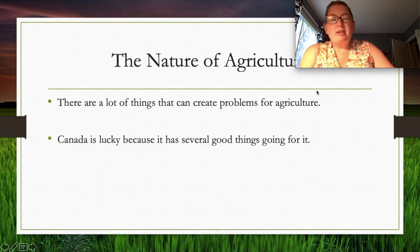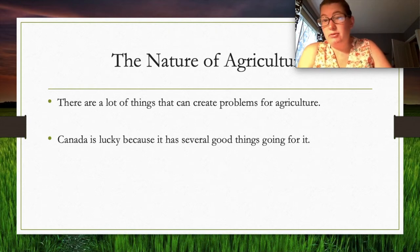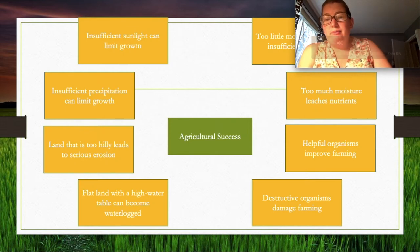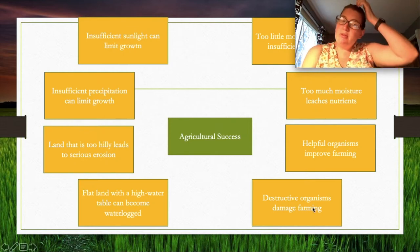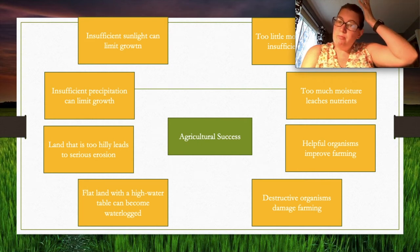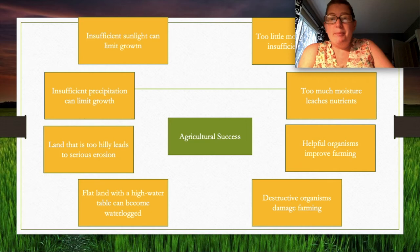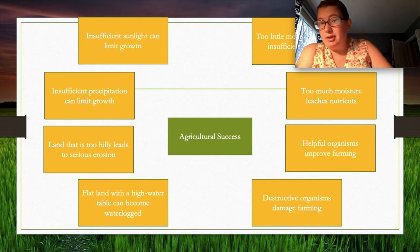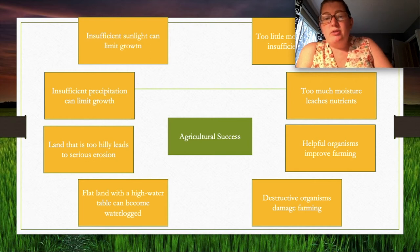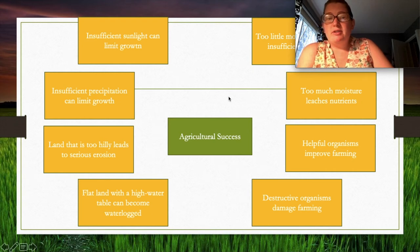There are many things that can create problems for agriculture. Canada is fortunate to have good soil, reliable growing seasons, and plenty of land. Agricultural success needs sufficient sunlight, adequate precipitation, and suitable land — not too hilly and without high water tables.